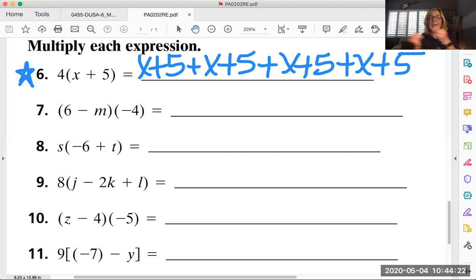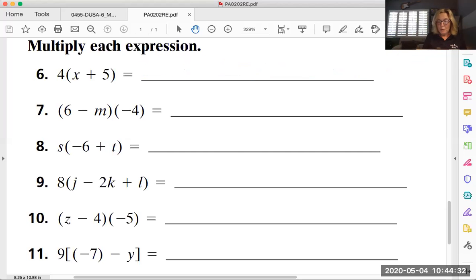So now if you put all the x's together there are four of them. We would call that 4x, and if you put the four fives together that would be a positive 20. Now there's a simpler way to do that and that would be with the distributive property.